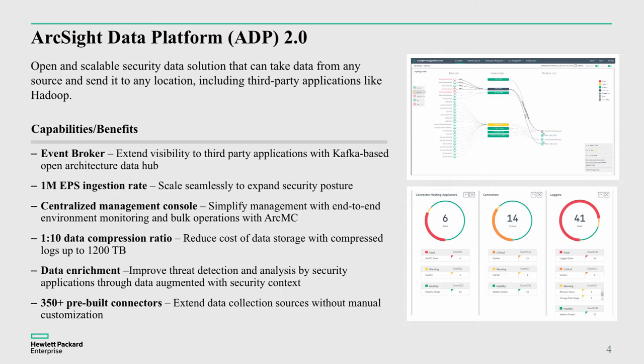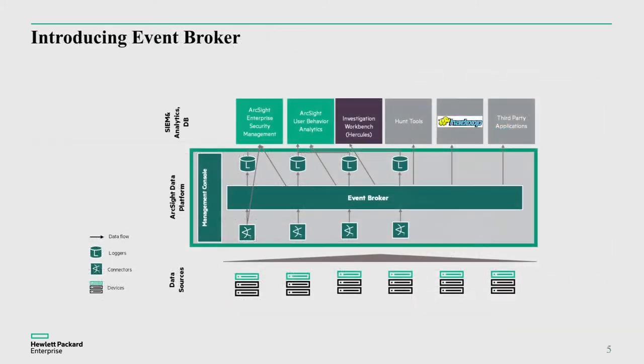We often see numbers like a million events per second ingestion — that's an extreme case, but that's the point. That's what ADP, or ArcSight Data Platform, is providing: the capability to collect and distribute data at scale like we've never had before. The Event Broker specifically is a Kafka-based message bus that allows us to collect data from those data sources and distribute it.